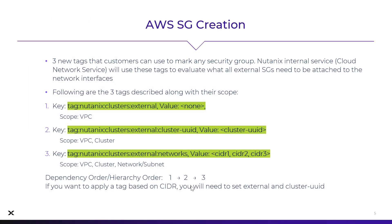We now have the ability to add three custom security groups. These three tags get applied to the security group. You just create a new security group, go into tags, and add: tag:Nutanix:clusters:external. That would be the first tag you use. This tag gives you a security group option to protect your whole environment — so if you had one, five, or ten clusters running, those security rules would be in place for the entire VPC.